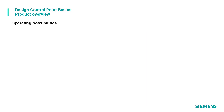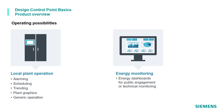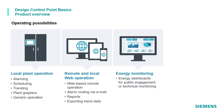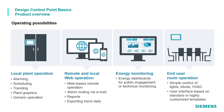DCGO Control Point provides several operating possibilities, for example: local plant operation like alarming, scheduling, trending, plant graphics, and generic operation; energy monitoring via dashboards for public engagement or technical monitoring; remote and local web operation like web-based remote operation, alarm routing via email, reports, and exporting trend data; and user room operation, meaning simple control of lights, blinds, and HVAC.